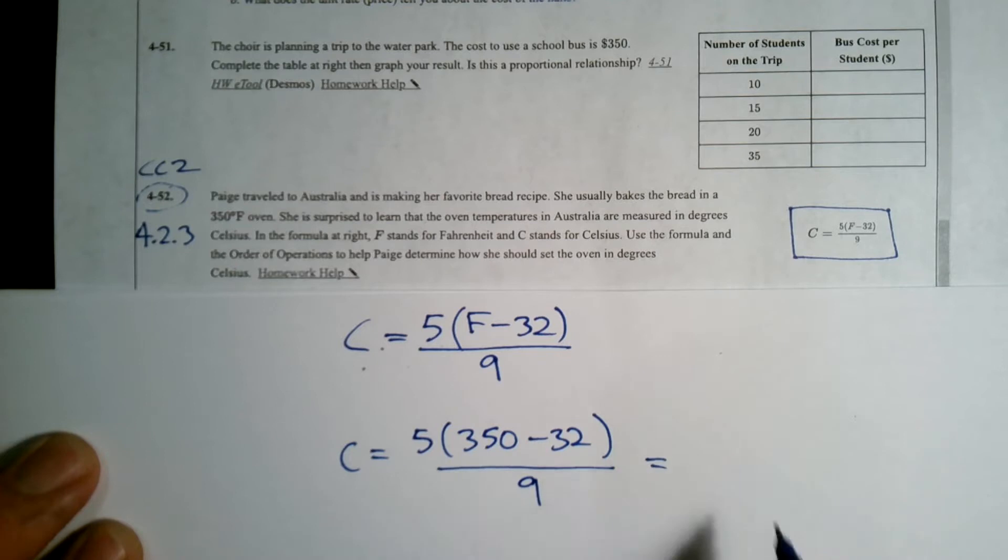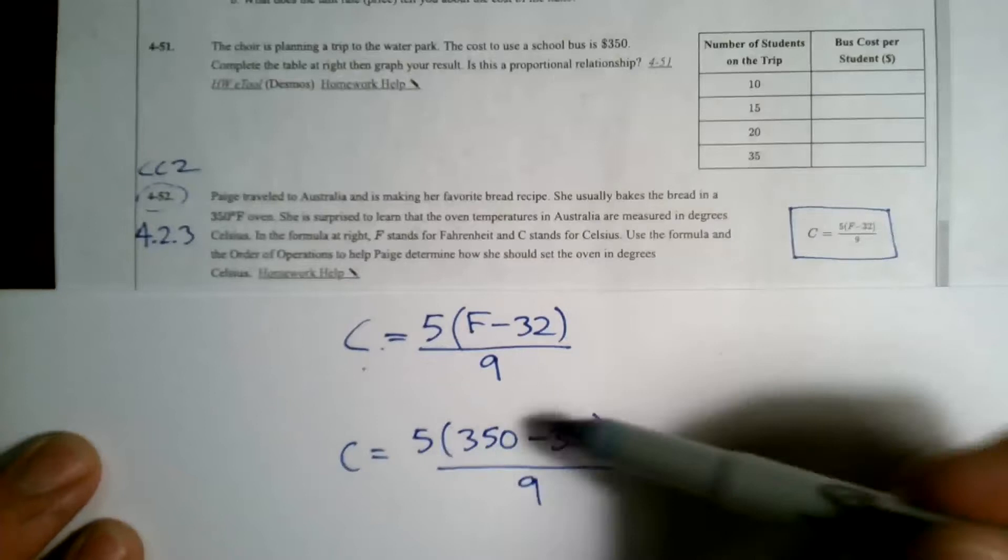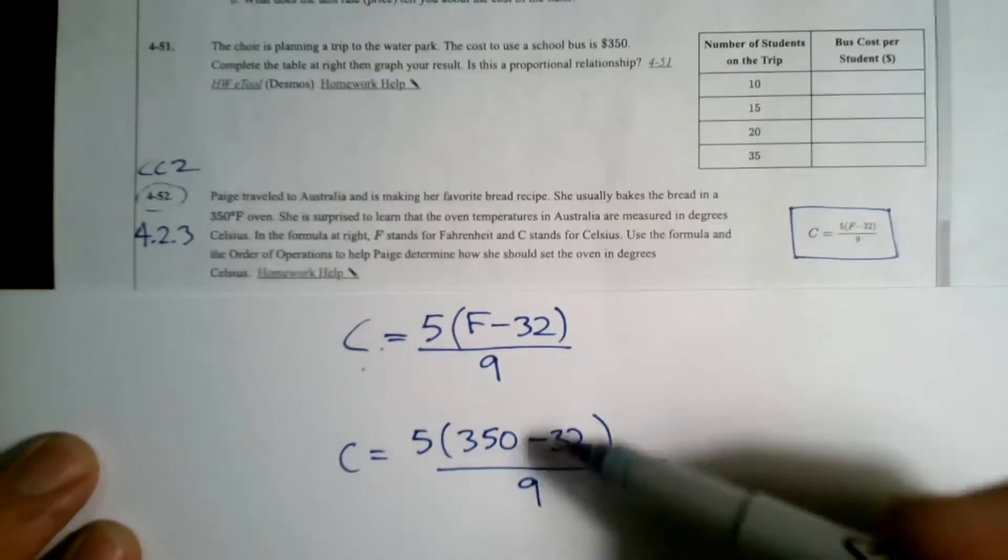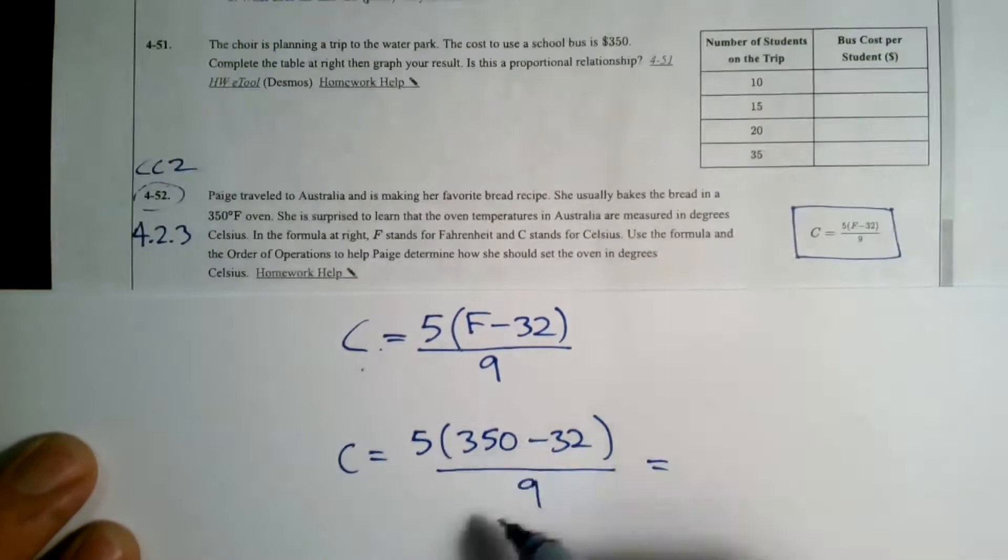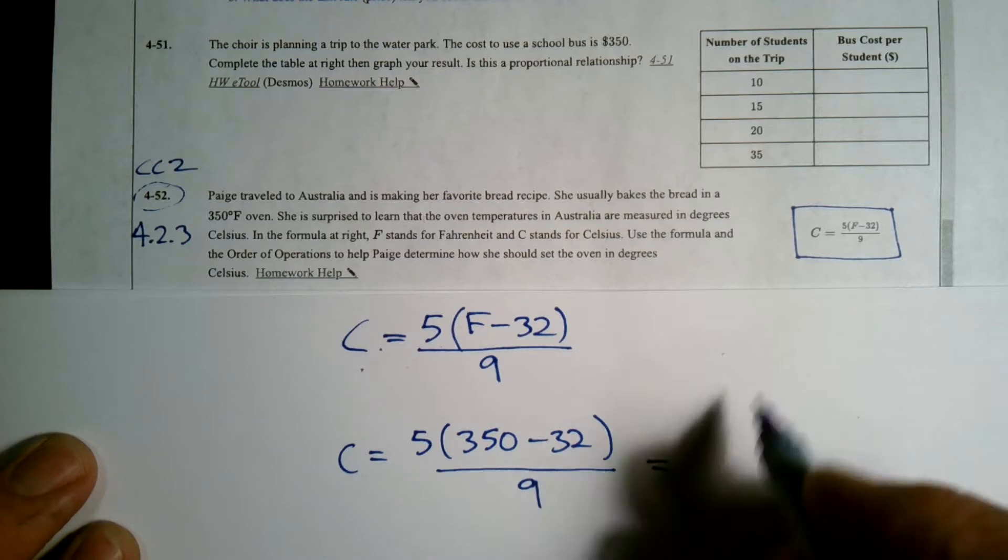So what do we do first? Well, order of operations, I need to deal with the parentheses up top first. I can't do this division until I really have one number. So the best way is to get the top part, the numerator, as one number before I look at this division by 9. So we'll do the parentheses first.